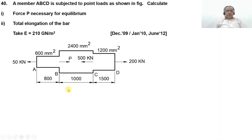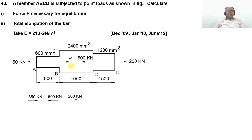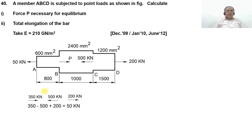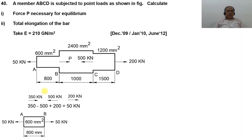Now we will find the equilibrium condition for each individual segment. For segment AB, on the left-hand side you have only 50 kilo Newton acting towards the left — positive because it is tensile. On the right-hand side: 350 kilo Newton towards the right, 500 kilo Newton towards the left, and 200 kilo Newton towards the right. That gives 350 minus 500 plus 200 equals 50 kilo Newton. So member AB is in equilibrium with area 600 mm square and length 800 mm, carrying 50 kilo Newton.